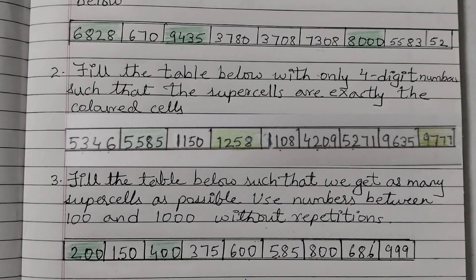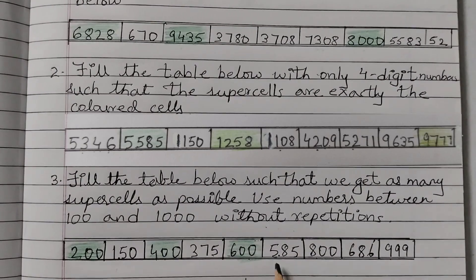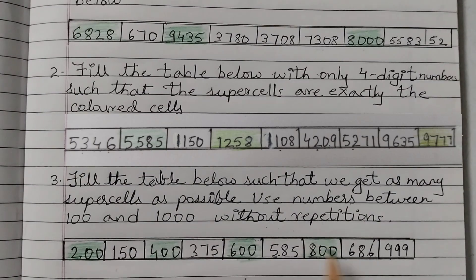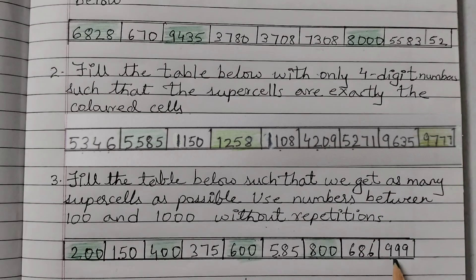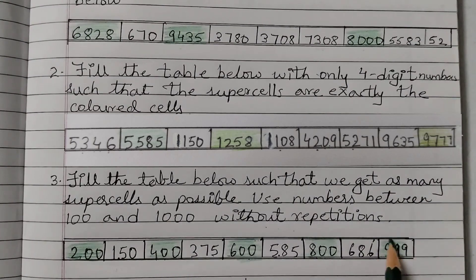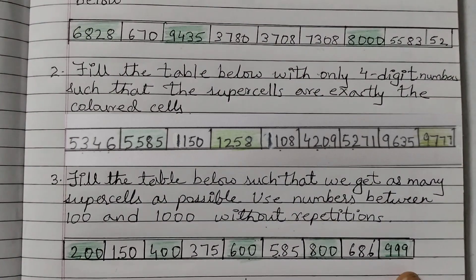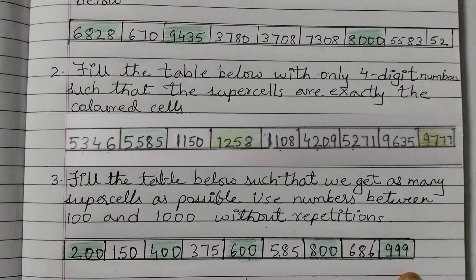Now let's color the supercells. 600 is greater than 375 and 585, so color it. 800 is greater than 585 and 686, so color it. 999 has just one neighbor and is greater than it, so color it. There is no fixed answer for this — you can write your own numbers. Just make sure you get 5 supercells.